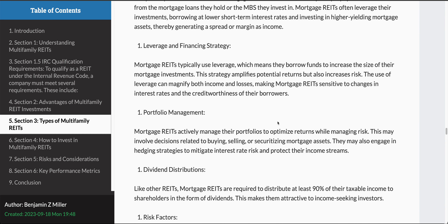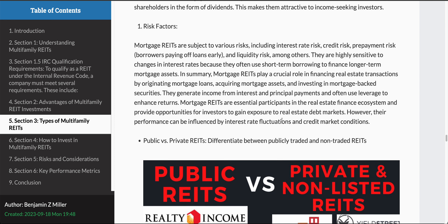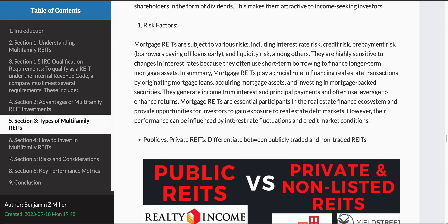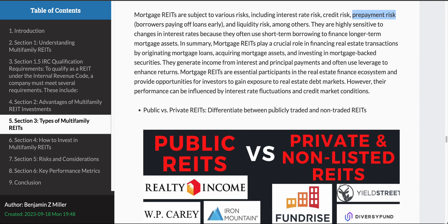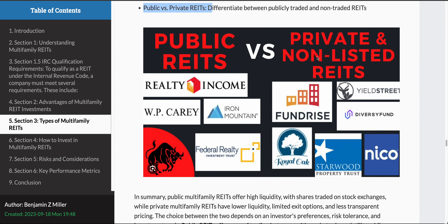There are important risk factors with REITs, including interest rate risk. There's also prepayment risk, because at any time the loan could be paid back early in most cases. Mortgage REITs are involved in a lot of different things. In terms of the two main categories of REITs — public and private — private REITs work the same as public REITs, but the difference is you give up the liquidity.